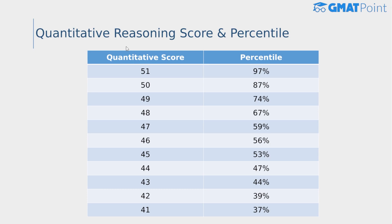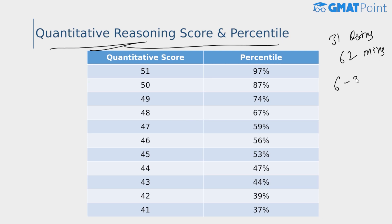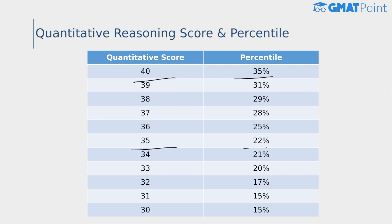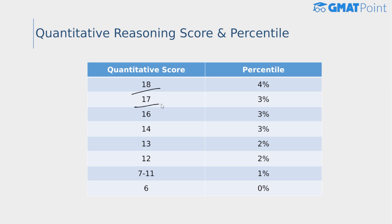Now let's look at section-wise scores versus percentiles. The quantitative reasoning section is one of the most important sections on the GMAT. It consists of 31 questions with a total time limit of 62 minutes, and the quant score ranges from 6 to 51. For a score of 51, the percentile is 97; for 47, it's 87; for 44, it's 47; for 41, it's 37; for 40, it's 35; and for 35, it's 22. The quant score ranges from 6 to 51, with the lowest score corresponding to the lowest percentile.